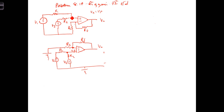Connected to the non-inverting terminal, we have two sources, V1 and V2, connected through resistors R1 and R2 respectively. Rather than trying to turn our brains upside down, let's redraw the circuit with the inverting terminal up top — functionally it's all the same, but hopefully a little easier to follow.